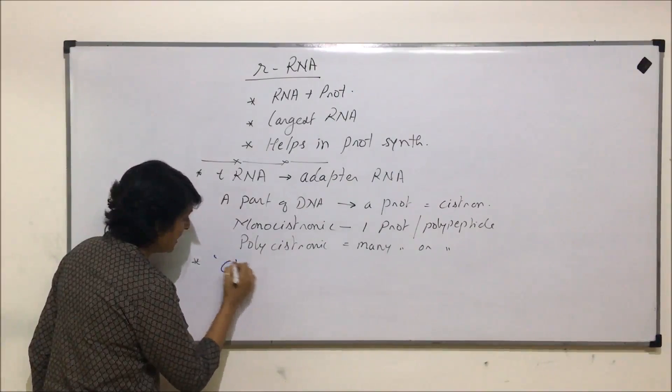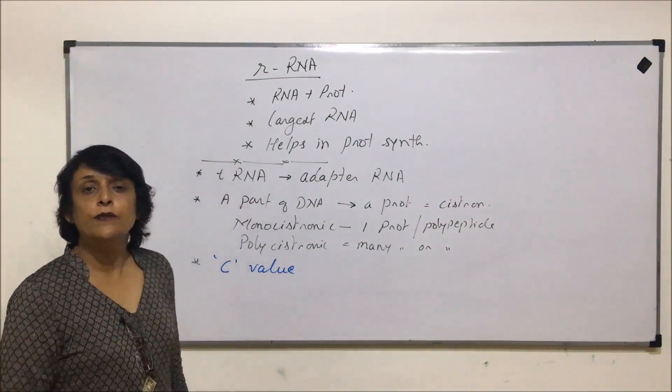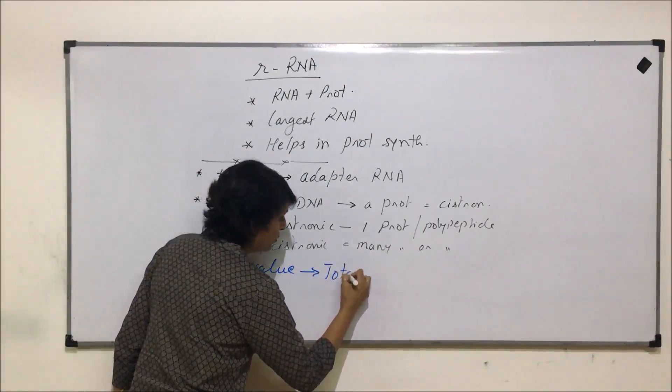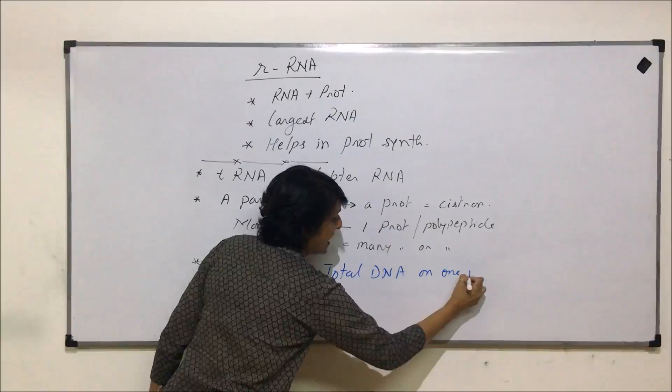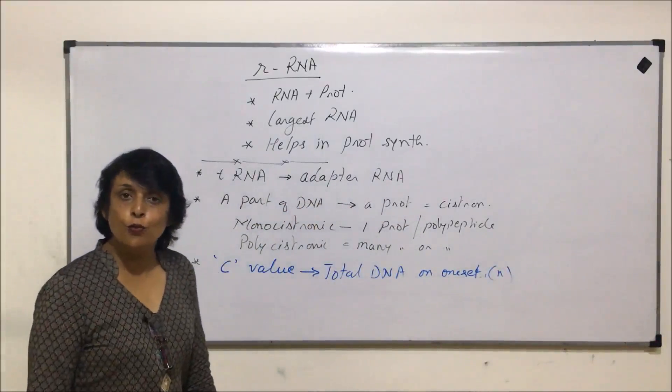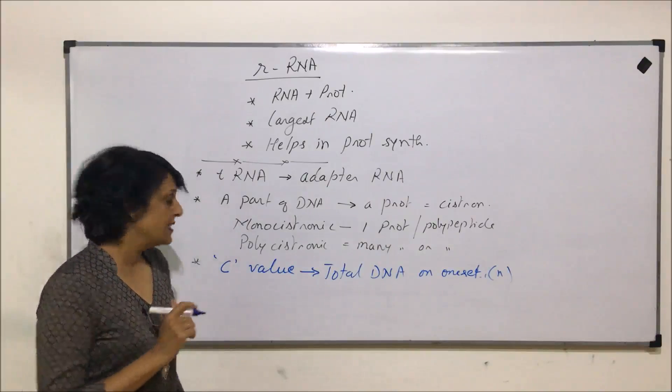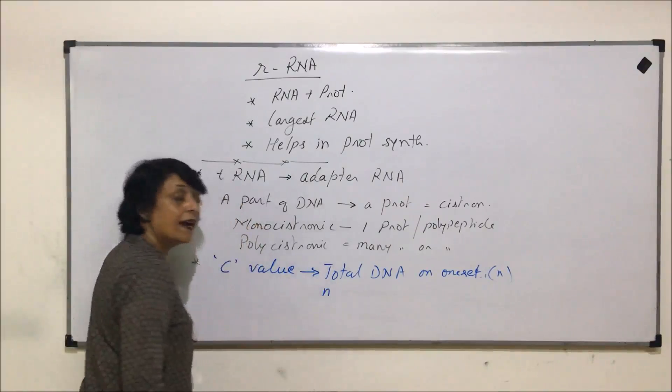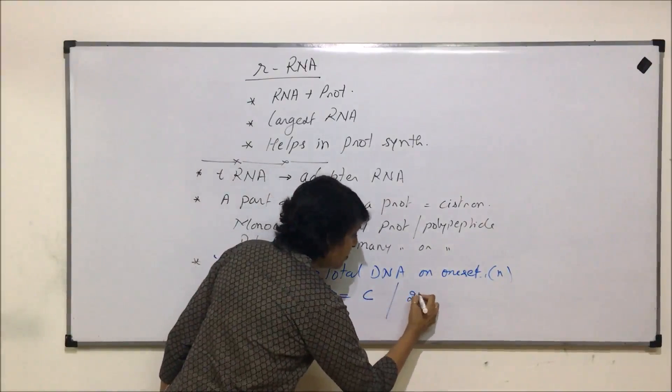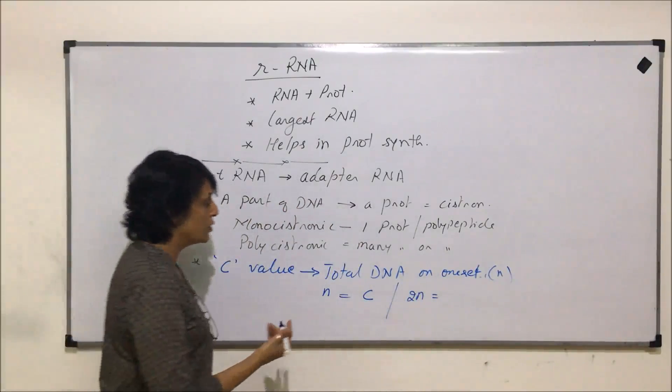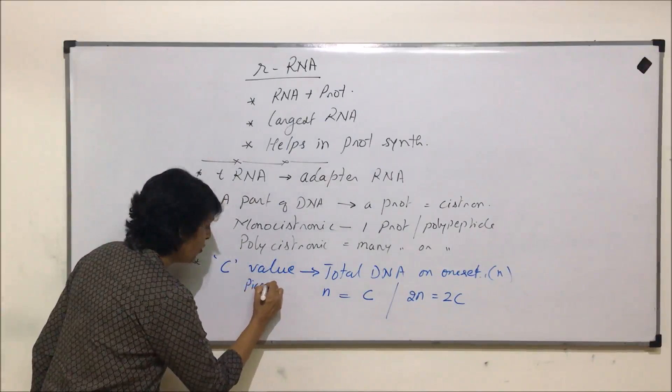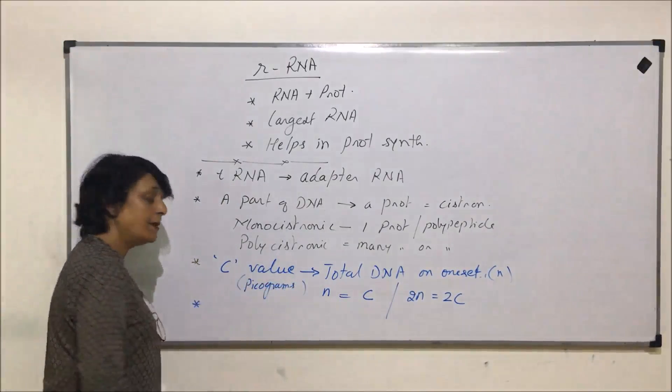Another important thing which we need to know about DNA is something called C value. C value is the total DNA content on one set of chromosomes. We know that the set is represented by N, that is, haploid number of chromosomes. That DNA is represented as C value. If a cell has one set or a cell is haploid, then the C value is just C, one C. And if a cell is diploid, then the DNA content becomes double, so we say the C value is 2C. This C value is expressed in picograms.